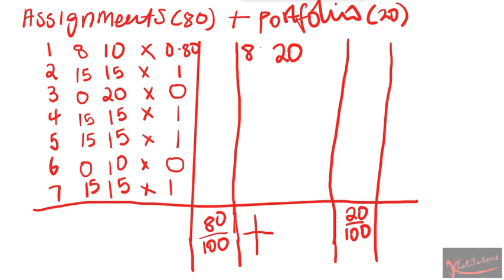In total, you got 8 plus 15 plus 0 plus 15 plus 15 plus 0 plus 15, which comes to 68. That's your total class mark.